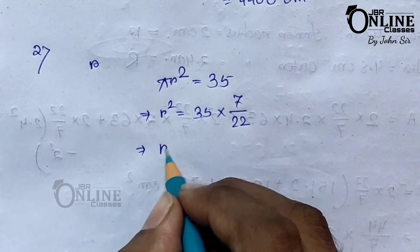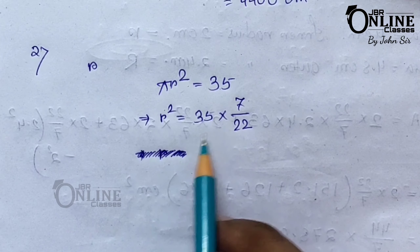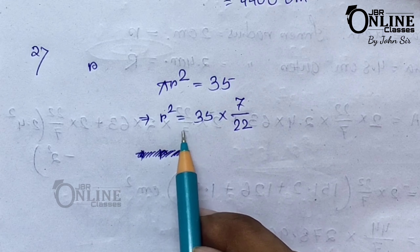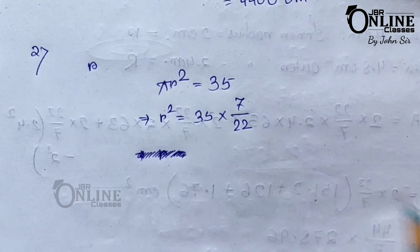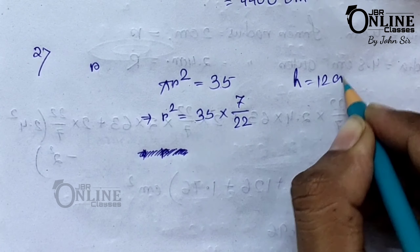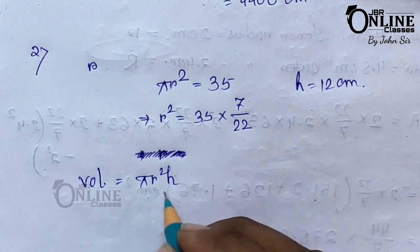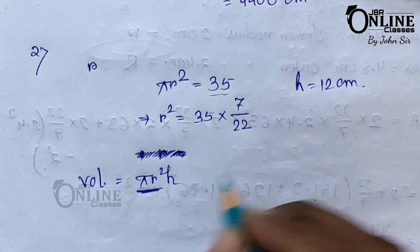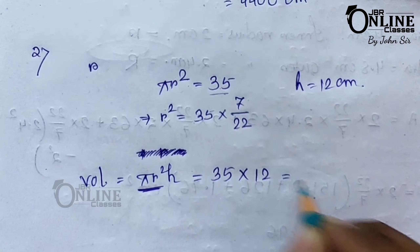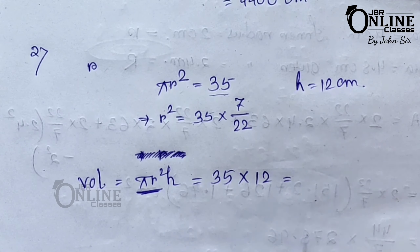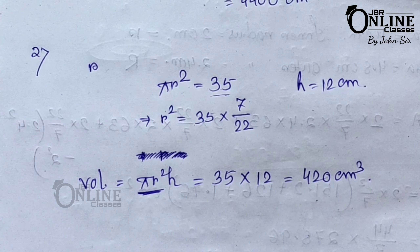There is no need to find the value of r individually, because in the volume formula we need r squared. Here h is 12 centimeters. Using volume formula pi r squared h, pi r squared equals 35, so directly substitute 35 × 12, giving the answer 420 centimeter cube.